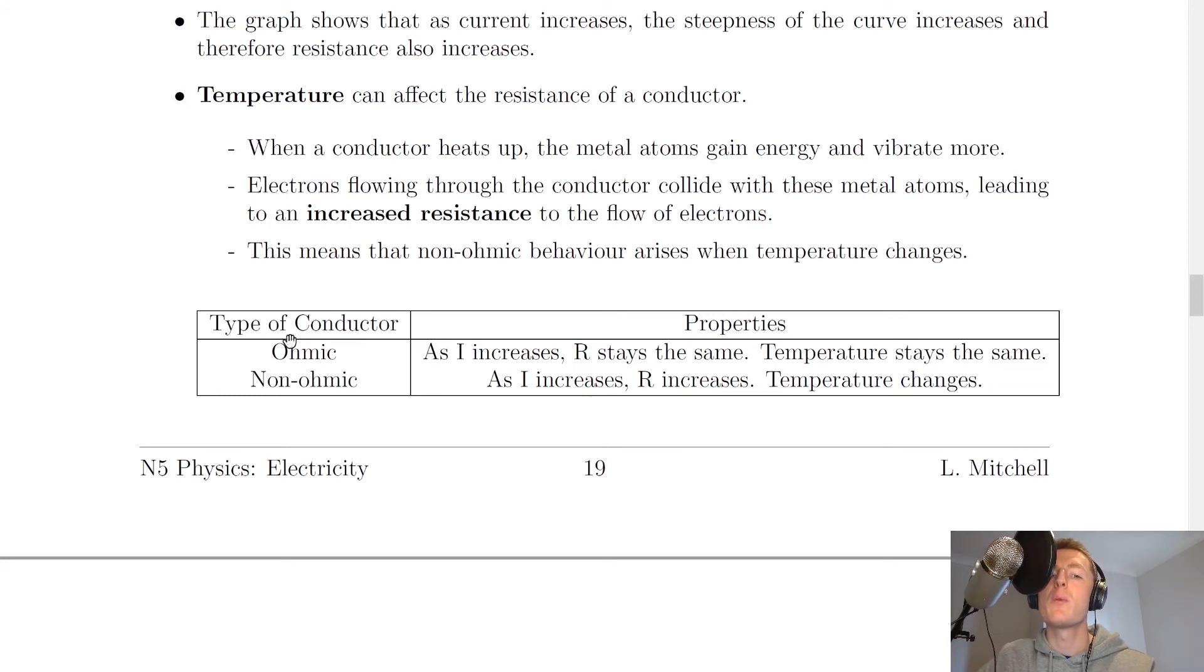we've got a little table here with type of conductor and some properties. So for ohmic conductors like a resistor, we've seen that as current increases, resistance stays the same, it's constant. And the temperature stays the same as well, because we're assuming that the temperature of the resistor is not going to heat up enough to cause any significant effects.